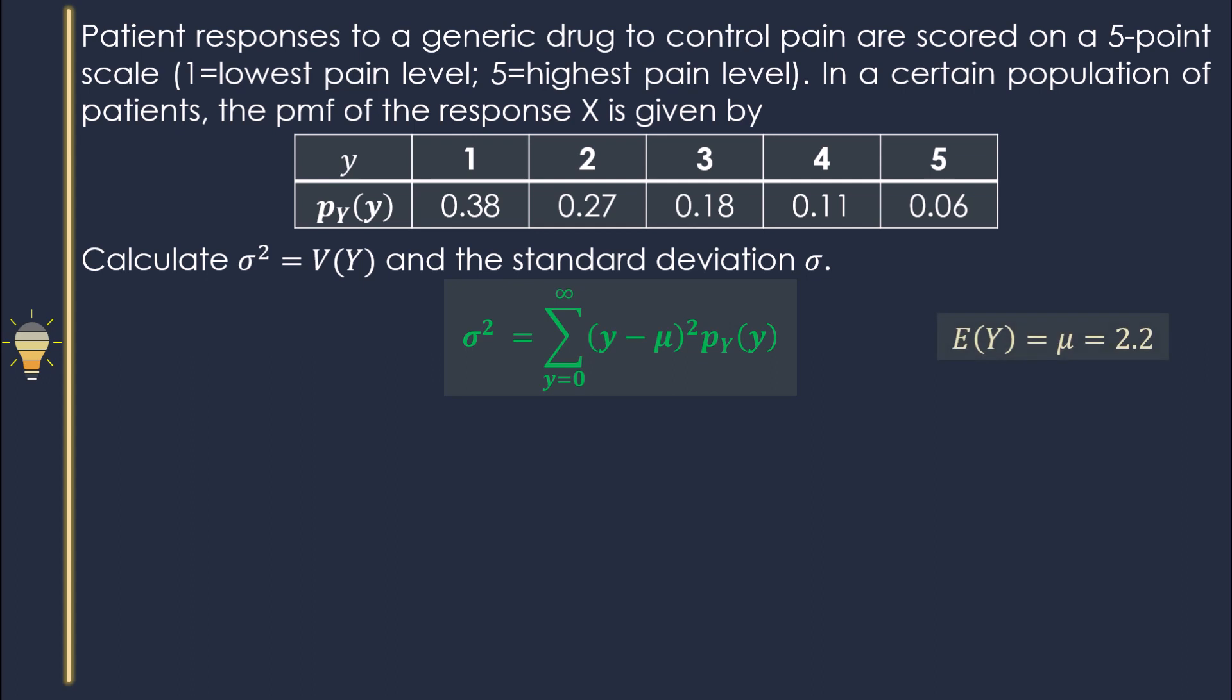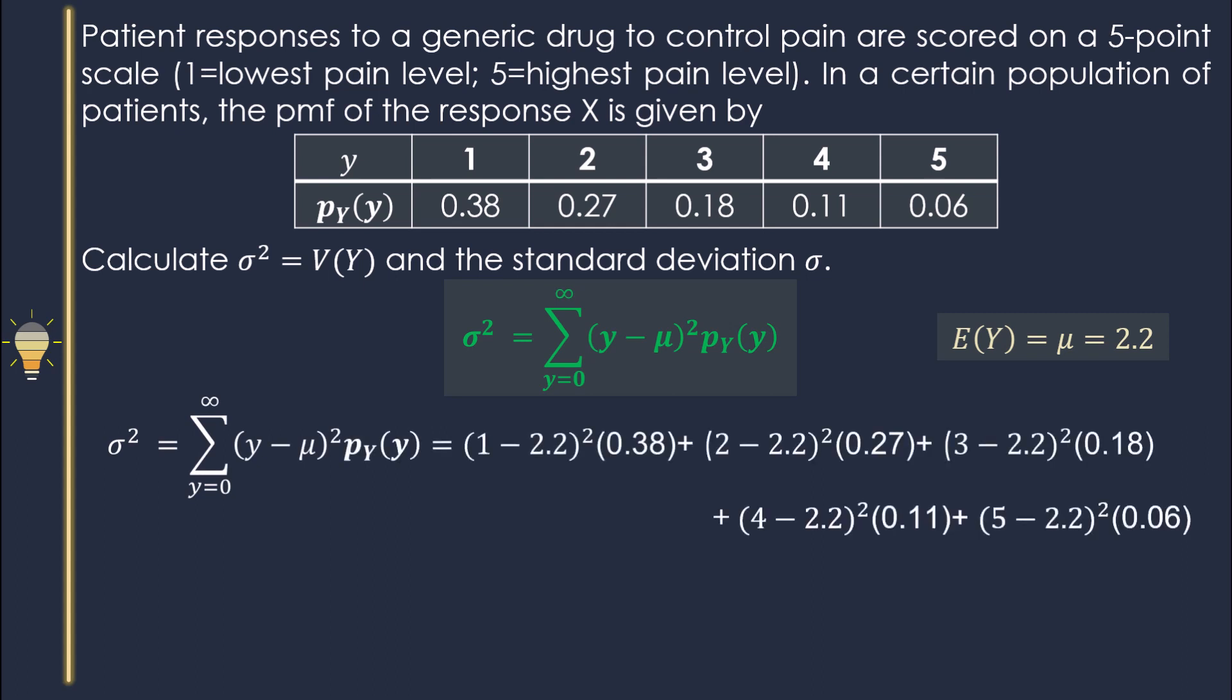Now we know Y values and the corresponding probabilities, so we can plug these numbers and simplify. So variance is 1.5. Now let me explain how to find the standard deviation sigma. What is the standard deviation?